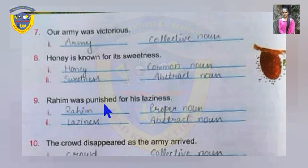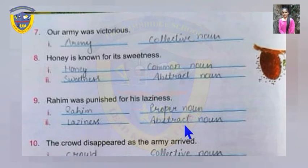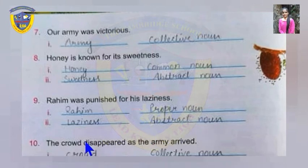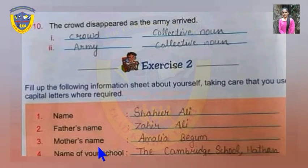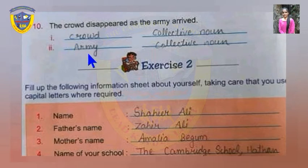Ninth sentence: Rahim was punished for his laziness. Rahim and laziness are nouns. Rahim is the name of a specific person, so it's a proper noun. Laziness is an abstract noun. Tenth sentence: the crowd disappeared as the army arrived. Here, crowd and army are the nouns, and both are collective nouns. Crowd is a word we use for a group of people, and army is also a name we use for a group of people.